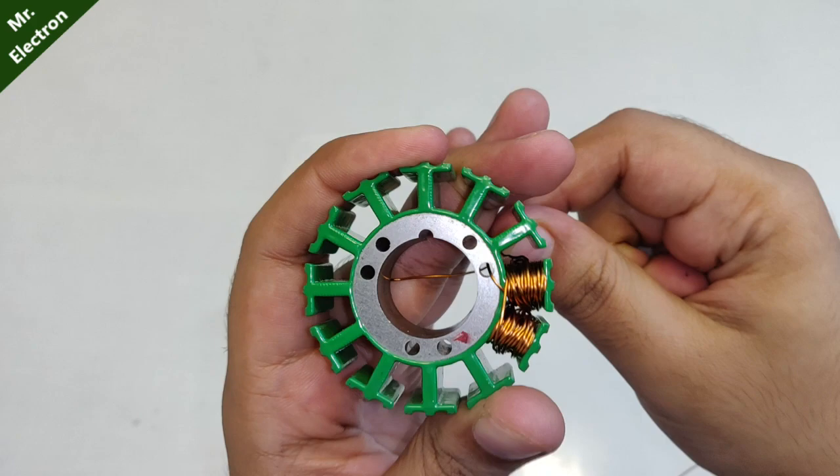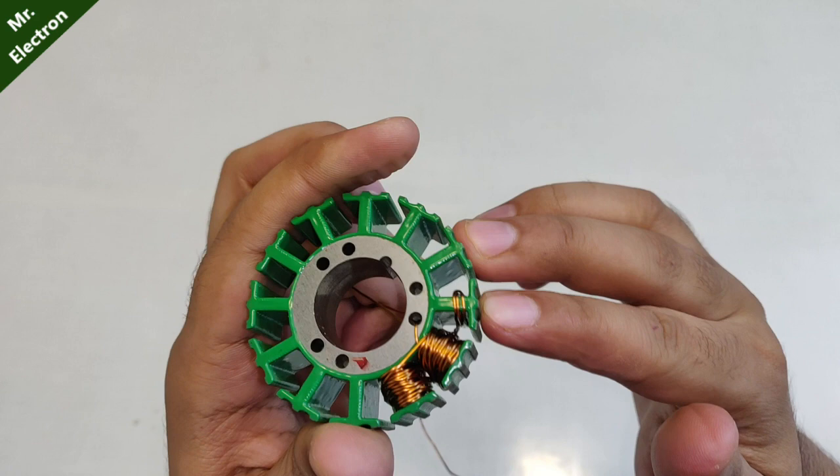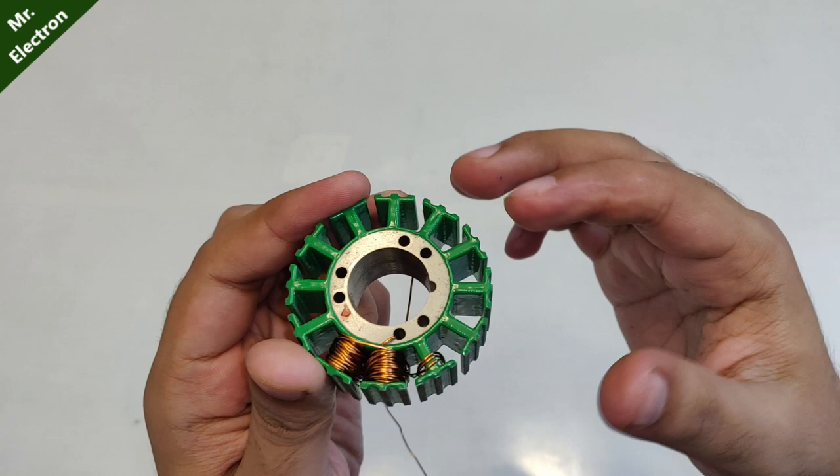Two clockwise, two anti-clockwise, two clockwise, then again two anti-clockwise. This way we have to fill up the armature completely with copper coil. So guys, after completing 25 turns on the third pole you have to start it the same way you started this one.